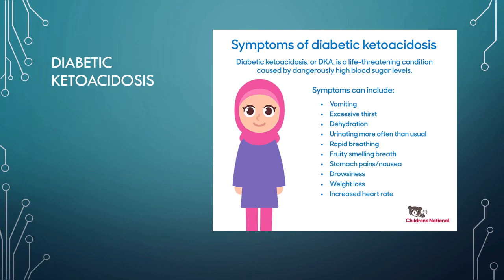Our patients will become very acidotic and also very dehydrated. This is a result of profound urination known as polyuria, as well as severe nausea and vomiting. With patients that have really profound dehydration, what are some of the things we need to be worried about as paramedics? Blood pressure would be one.